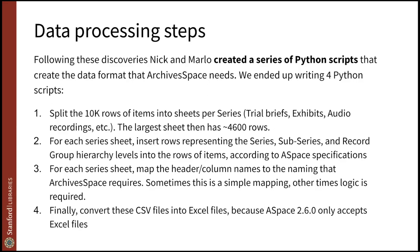For each series sheet, we've been working in our own mental model of how the data makes sense to us. But ultimately we need to map the header and column names into the naming conventions that ArchivesSpace requires. So we have another script that converts the names of the columns and moves things into all the right places. Finally, as the last step, we export or convert all of these files into Excel files, because our version of ArchivesSpace only accepts Excel files.